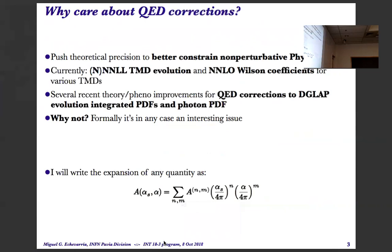So why do we care about QED corrections? First of all, why not? Formally, it's interesting. We don't always need to wait for experiments — theory can go faster. People in the one-dimensional world thought about this progressively more in the last year, so why not in the 3D case? The main goal is always to push the theoretical precision, because we want to extract non-perturbative information. The better we know the perturbative, the better. Currently, the TMD evolution is known almost up to next-to-next-to-next-to-leading log — really accurate. And the Wilson coefficients for the TMDs are known at NNLO for several TMDs. So the accuracy in QCD is really high, and it's time to think of QED corrections.